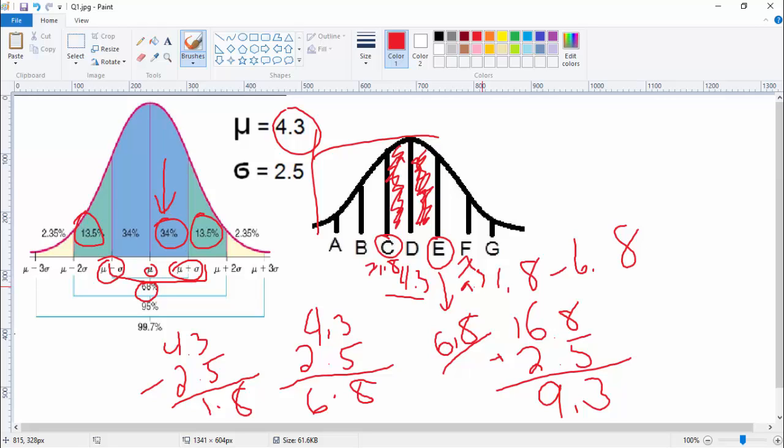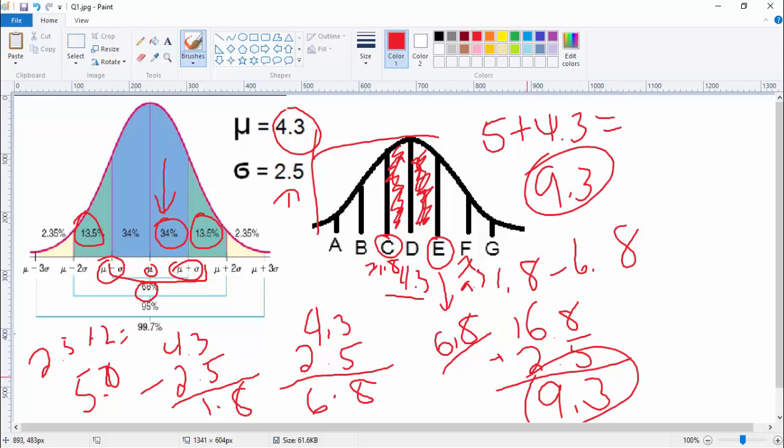You can do that. Or some people like to times this by two. So you'd say 2.5 times 2 equals, I think it's 5, right? 5.0. So if you do that, if you just add 5 to the mean, I'm running out of room here, 5 plus 4.3, then you'll get the same answer, 9.3. It's just two different ways of doing it.